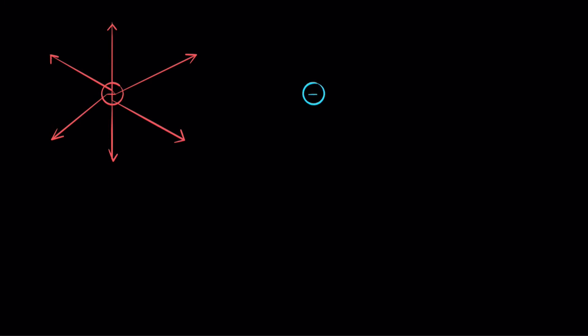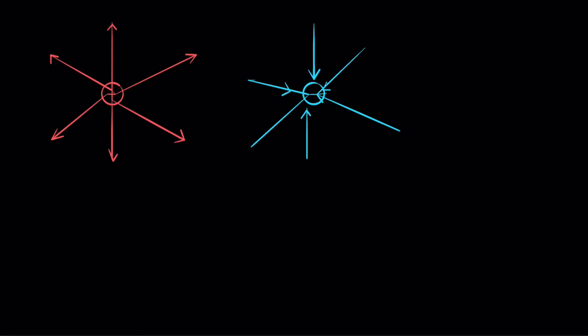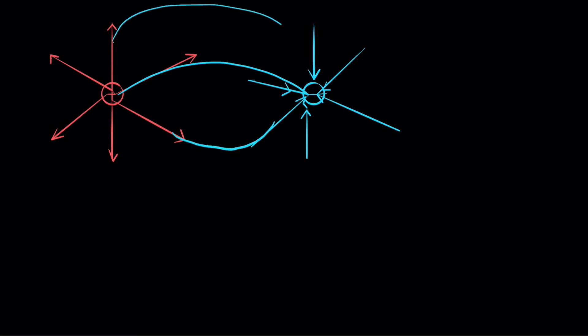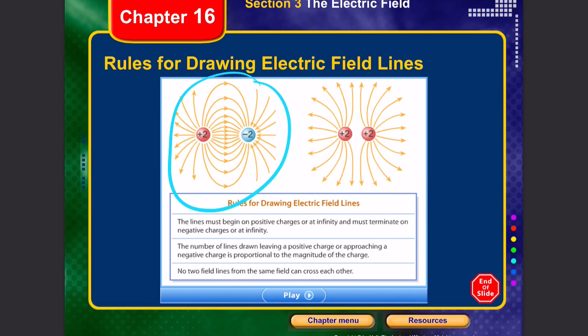For a negative charge, all the field lines point inward. When a positive and a negative charge come close to each other, the field lines start from the positive charge, curve, and terminate at the negative charge, creating a symmetrical field line pattern.